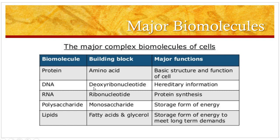DNA is a nucleic acid made up of deoxyribonucleotides and they transfer hereditary information. RNA is another nucleic acid made up of ribonucleotides and they play a role in protein synthesis. Polysaccharides — that is the carbohydrates — are made up of monosaccharide units and they are the storage form of energy. Lipids are made up of fatty acids and glycerol and they are the storage form of energy to meet long-term demands.